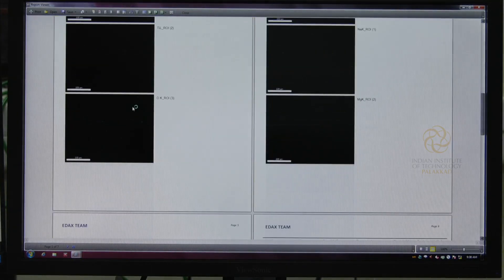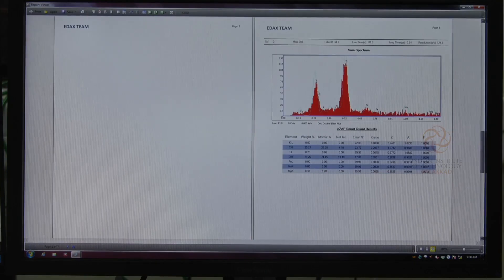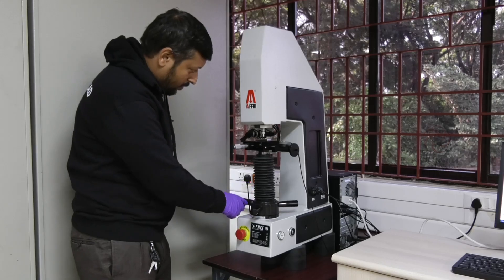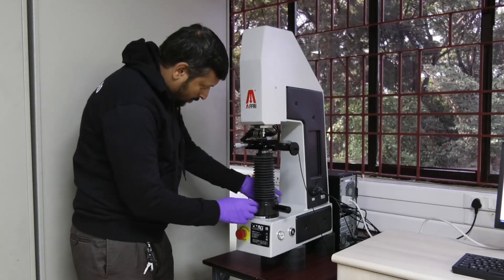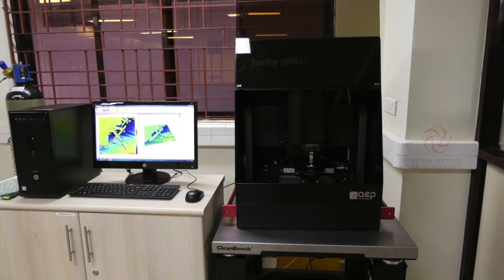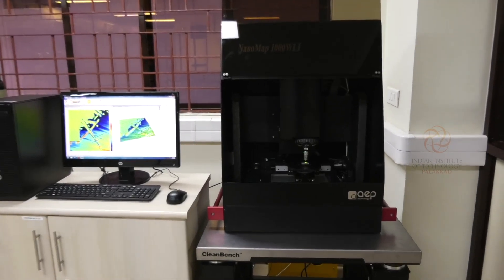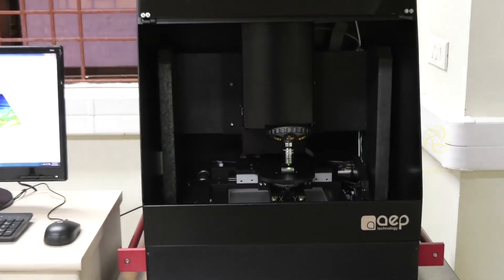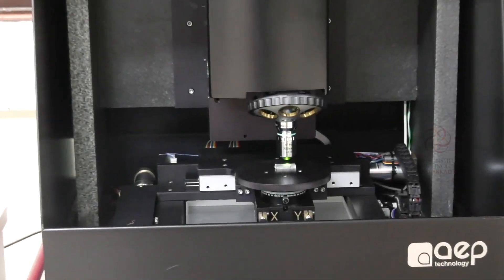Metallic specimens can be further characterized for mechanical properties at various scales using the Universal Hardness Tester. Surface features of the electronic devices, machine surfaces, etc. shall be assessed using non-contact optical profilometry.